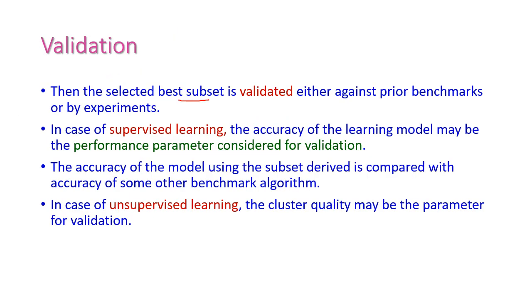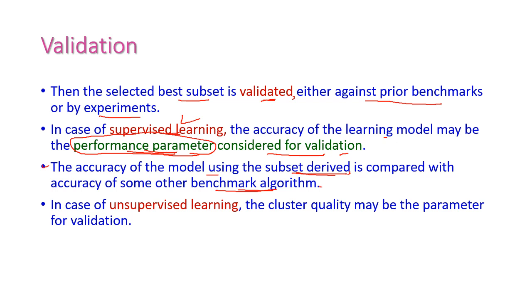The selected subset will be validated. There are two types: it may be either validated against a prior benchmark or by some experiments. When it comes to supervised learning, the accuracy of the learning model may be the performance parameter considered for validation. The accuracy of the model using the derived subset is compared with some other benchmark algorithm, that is the best performing algorithm. When it comes to unsupervised learning, the cluster quality is the parameter for validation.